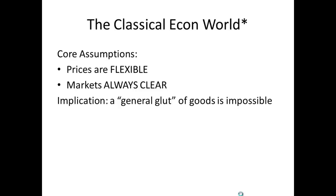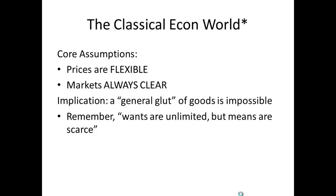If you had too many goods in the economy in general, how could we have too many goods? Scarcity. Wants are unlimited, but means are scarce. Classical economics says we could never have too many goods in general, which would lead to a decline in production and widespread unemployment.